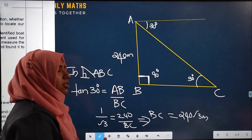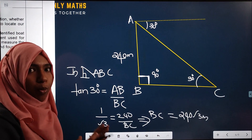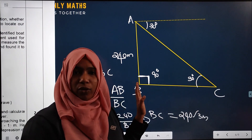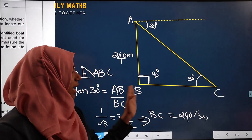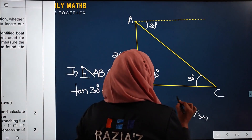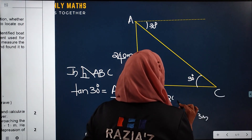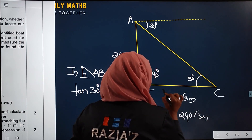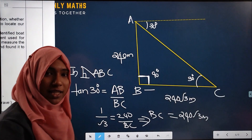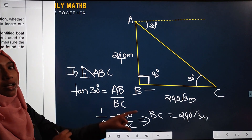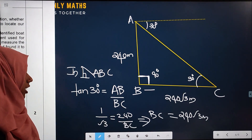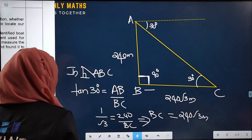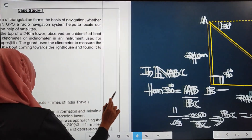So the distance of the boat from the foot of the tower is equal to 240√3 meters. This is the answer to our first sub-question from the case study question.